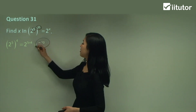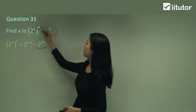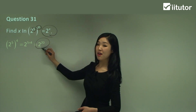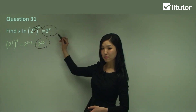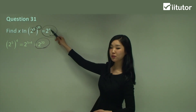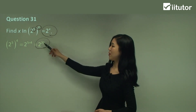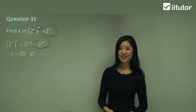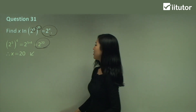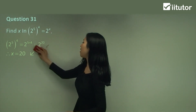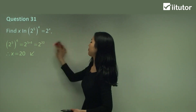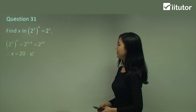Now this is equal to 2 to the power of x. The base is the same, so therefore the indices must be the same. So x must be equal to 20. That's the answer to question 31, just using our law of powers.